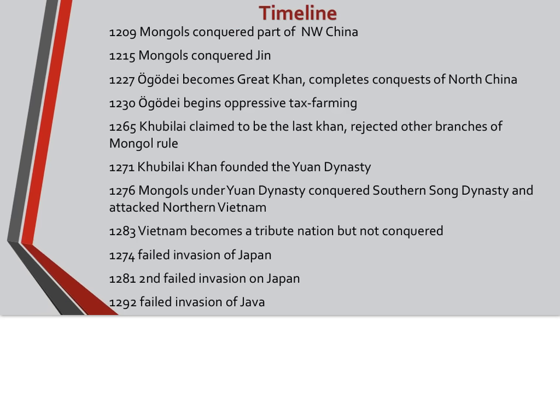Let's look at this timeline. In 1209, the Mongols began their conquest of northwest China. In 1215, they conquered the Jin dynasty, which was in modern-day Manchuria. In 1227, Ogedei becomes Great Khan, completes the conquest of north China, and unites the Mongolian empire in 1230.